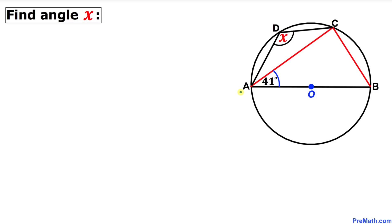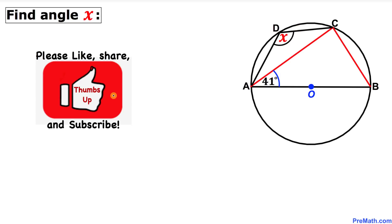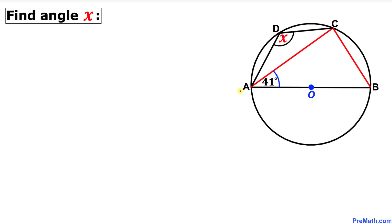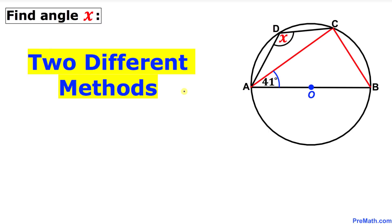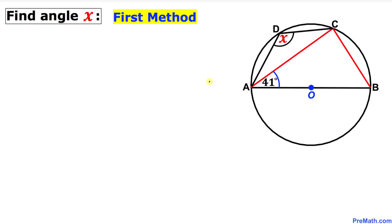Welcome to pre-math. In this video tutorial we have a compound shape that consists of a circle and triangles, such that angle BAC is 41 degrees, and we are going to find the value of angle X. I will be sharing two different approaches to solve this problem.